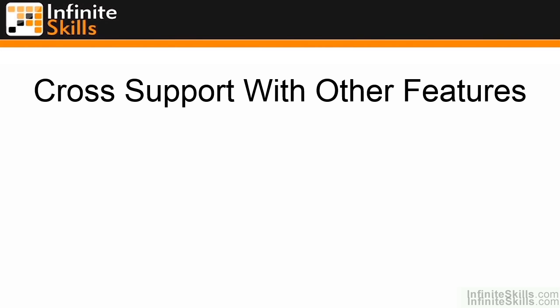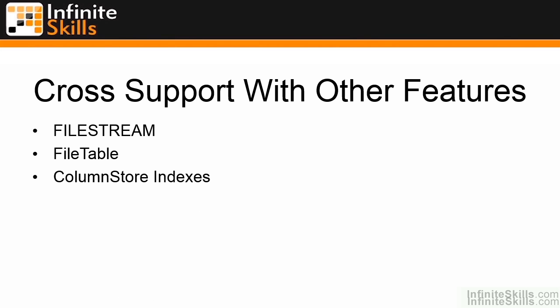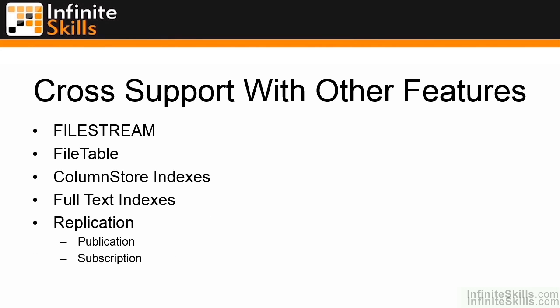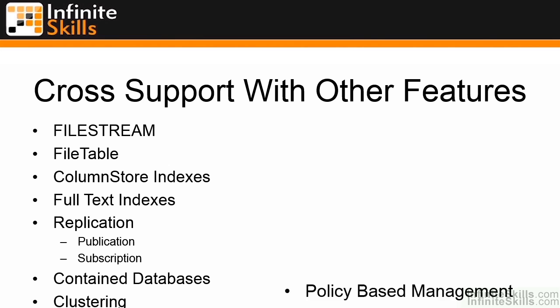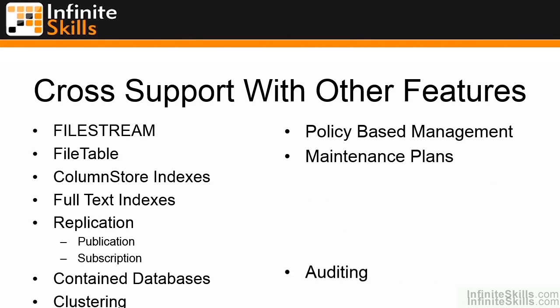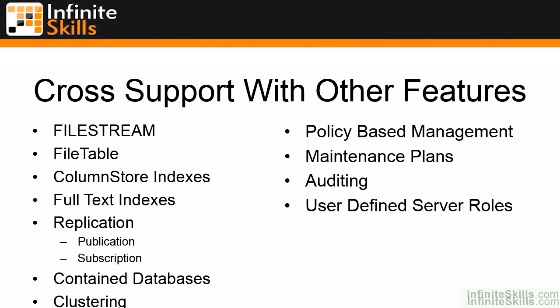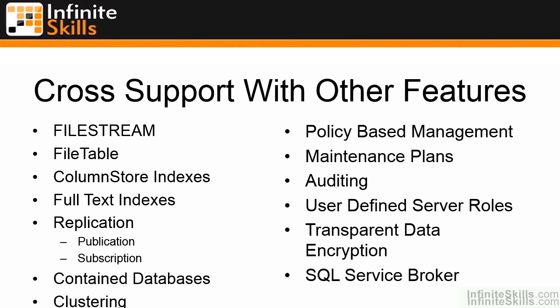One of the really nice things about Always-On Availability Groups is the broad cross-support with other SQL Server features — including many features not supported by database mirroring. This includes file stream, file table, column store, full text indexes, replication (both publication and subscription), contained databases, traditional failover clustering, policy-based management, database maintenance plans, auditing, user-defined server roles, transparent data encryption, and the SQL Service Broker.